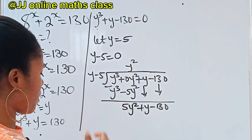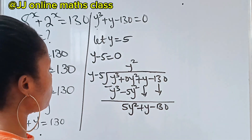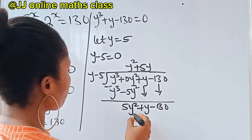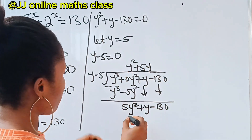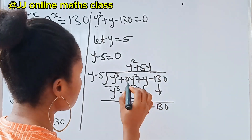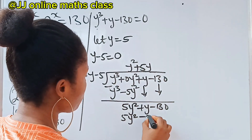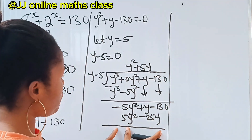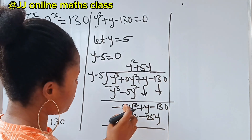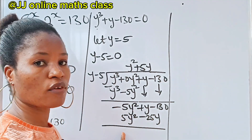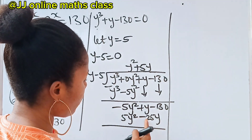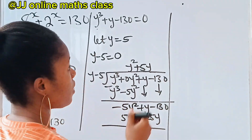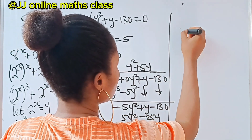When y divides 5y squared we get plus 5y. Then 5y times y gives 5y squared, and 5y times minus 5 gives minus 25y. We subtract: 5y squared minus 5y squared is 0. Then y minus minus 25y becomes y plus 25y, which is 26y.